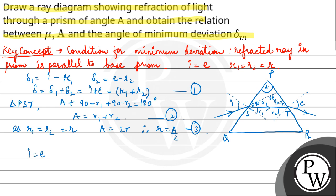Now, as I is equal to E, delta is equal to I plus E, which becomes 2I minus R1 equals R2, which is 2R. So 2I minus 2R is equal to delta. From here, I becomes delta plus A by 2. This is delta M, minimum deviation. This is the fourth equation.